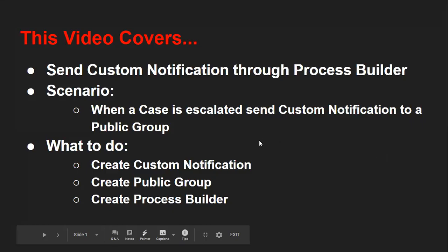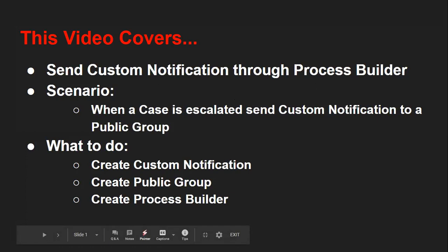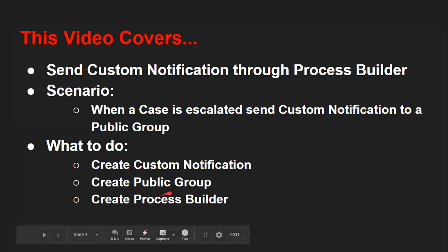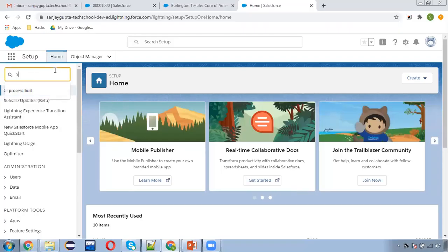Hello friends, I am Sanjay Gupta. I welcome you to Sanjay Gupta Tech School. In this video I am going to demonstrate how you can send custom notifications through Process Builder. Our scenario is: when a case is escalated, we need to send a custom notification to a public group — users in this group are those who monitor cases escalated by a particular case owner. To accomplish this, we need to create a custom notification, a public group, and then a process builder. I am going to create the custom notification first.